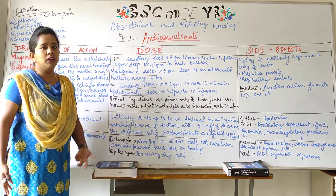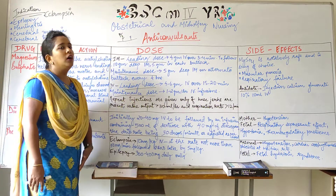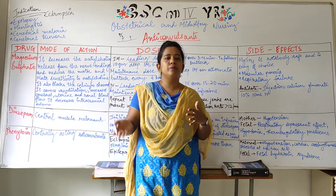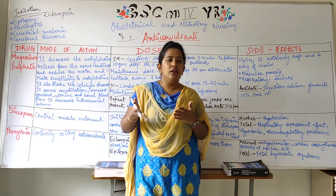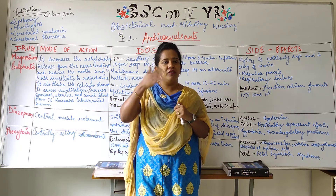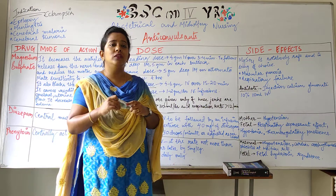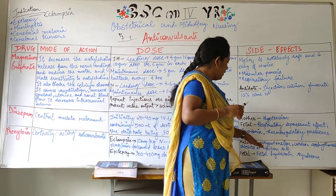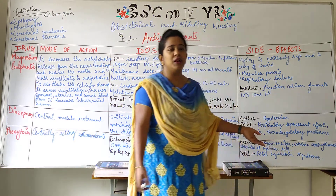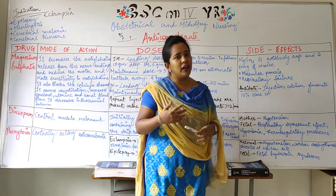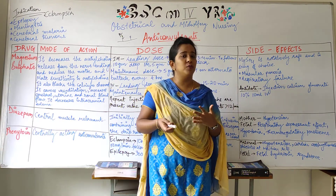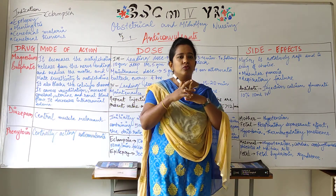For epilepsy, phenytoin is given as 300–400 mg daily orally in divided doses. The exact division depends on the doctor's prescription according to the mother's health — the full dose is not given as a single tablet. Maternal side effects include hypotension, respiratory problems, and cardiac dysrhythmias.